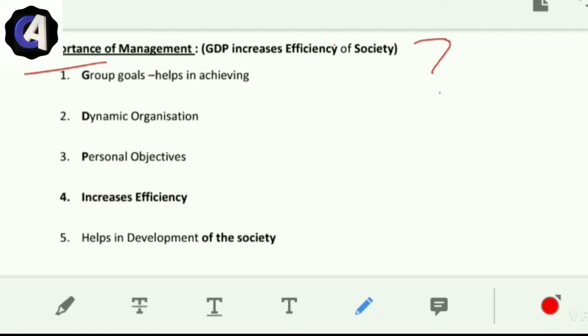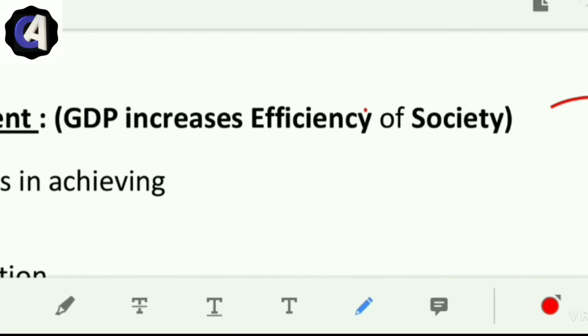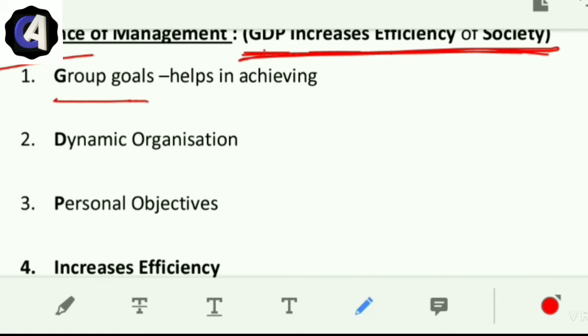Importance of management - why is management important? The memory technique is: GDP increases efficiency of society. G means it helps in achieving group goals. Management ensures that group goals and individual goals of people working in groups are aligned with organizational goals. Management helps in achieving group goals.